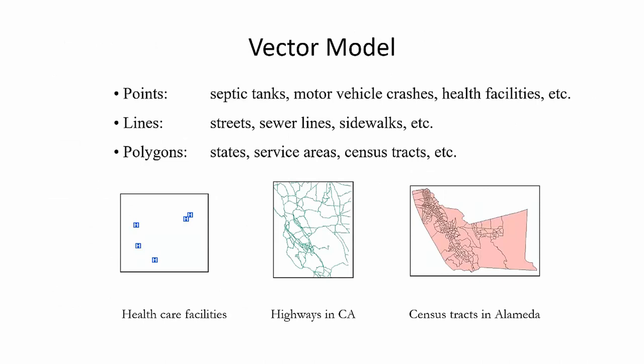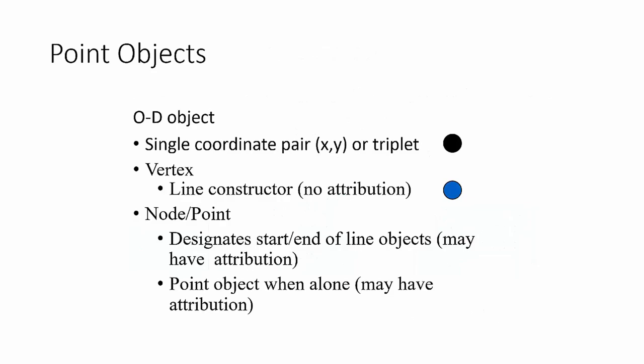Examples of points: motor vehicle crashes, health facilities, septic tanks, earthquake locations. Examples of lines: street center lines, but also edges of streets, subsurface gas lines, flight paths of airplanes, the path of a hurricane moving across the landscape. Examples of polygons: political boundaries, states, counties, voting districts, generated service areas for hospitals or police coverage, and areas of aggregation like census tracts for rolled-up demographic information. All stored in vector data models.